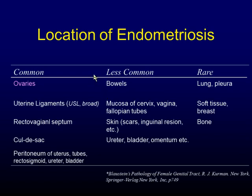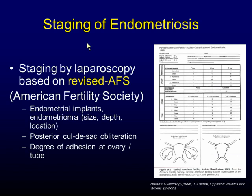Endometriosis affects all the pelvic organs and even the abdomen and lung in some cases. The most common site of involvement is the ovaries. Ovarian endometriosis is called endometriotic cyst or endometrioma, or sometimes called chocolate cyst. The staging of endometriosis is established by laparoscopy and is based on the Revised American Fertility Society classification, which considers the variation of endometrial implants, the degree of obliteration, and the variation of adhesion.